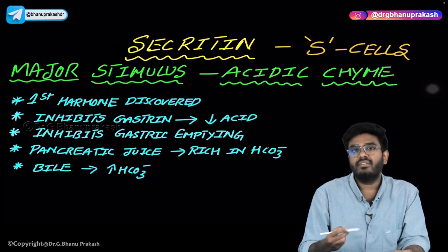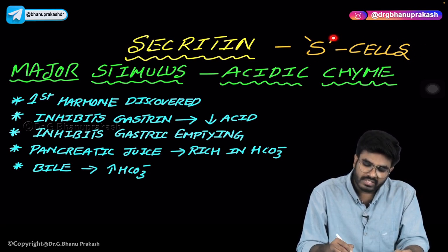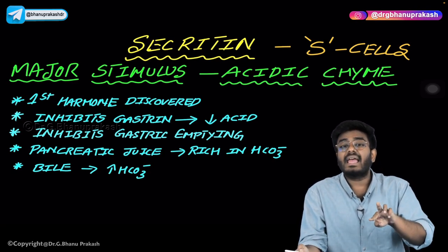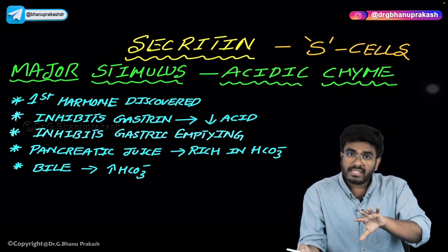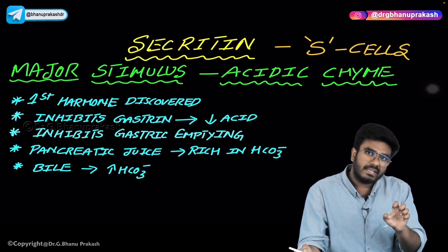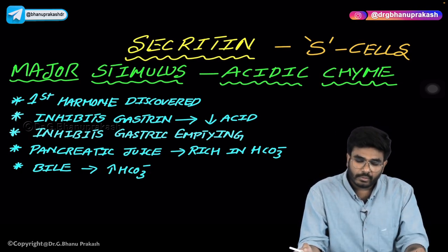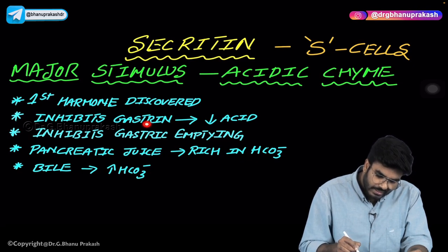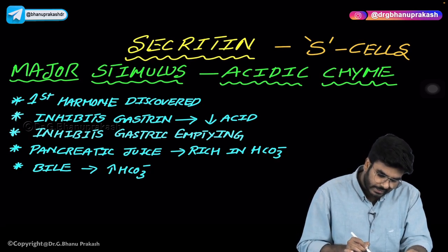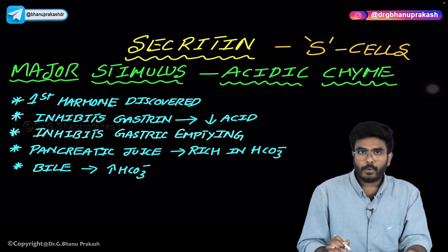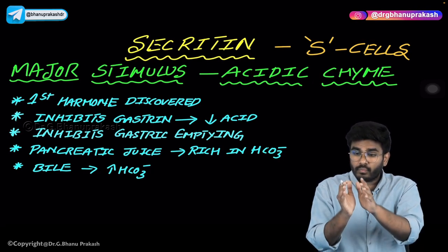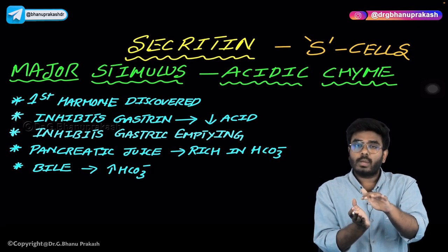Now a few points about secretin. Secretin comes from S cells in the duodenum. The major stimulus for secretin release is acidic chyme — when acidic chyme enters the duodenum, the S cells recognize the acid and release secretin. Secretin inhibits the release of gastrin, decreasing acid production, and it inhibits gastric emptying. This means food from the stomach doesn't all come into the duodenum at once, preventing excessive acid from flooding the duodenum.